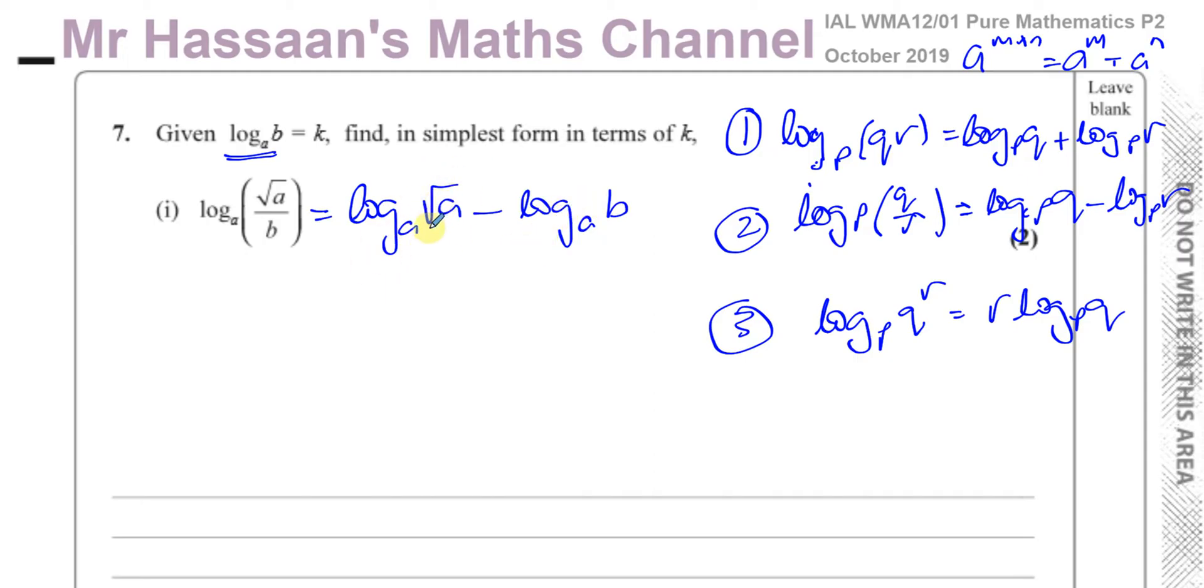Now, I'm going to express this in index form because then I may be able to apply this law because the root of A is the same as A to the power of a half. So this is going to be log to the base A of A to the power of a half minus K, because I know that K is equal to log to the base A, B. And I also know from the power law that I'm going to do a half times log to the base A of A minus K.